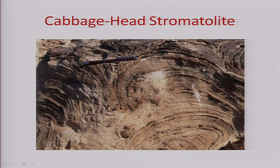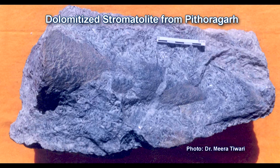Here you can see curved layers with convexity on top, tending to overlie one another. This is one single column, and there is another column here with a slightly different shape. In between is what we call intercolumnar space. They form similar types of structures and are sometimes replaced by dolomite or other minerals, making them good indicators of sedimentary environment.